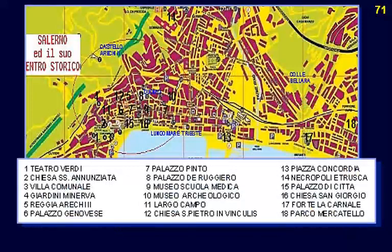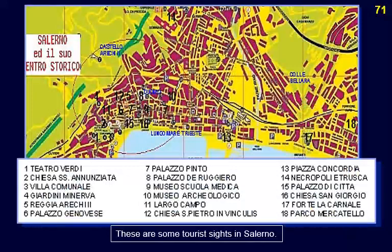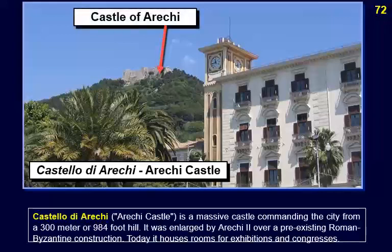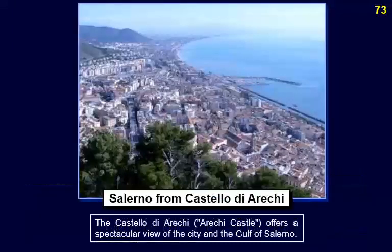These are some tourist sites in Salerno. Castello di Arechi is a massive castle commanding the city from a 300-meter or 984-foot hill. It was enlarged by Arechi II over a pre-existing Roman-Byzantine construction. Today it houses rooms for exhibitions and congresses, and offers a spectacular view of the city and the Gulf of Salerno.